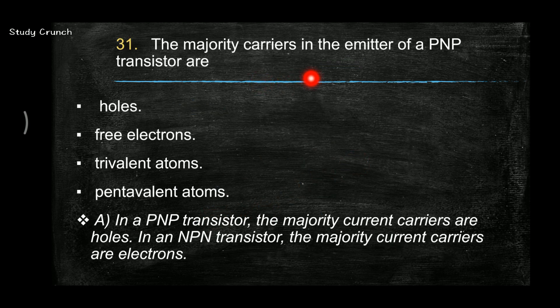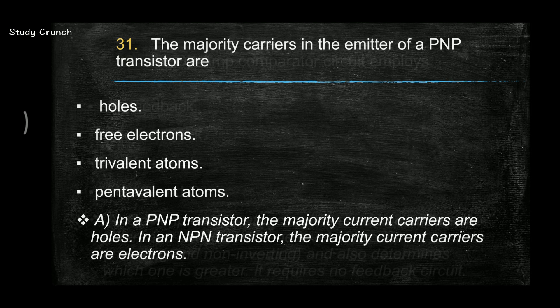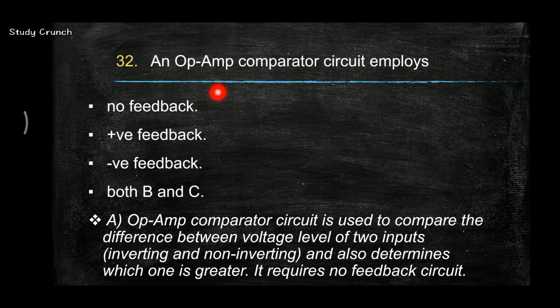The majority carriers in emitter of a PNP transistor are holes. An op-amp comparator circuit employs no feedback. Op-amp comparator circuit is used to compare the difference between the voltage level of two inputs, inverting and non-inverting, and also determines which one is greater. So it requires no feedback.